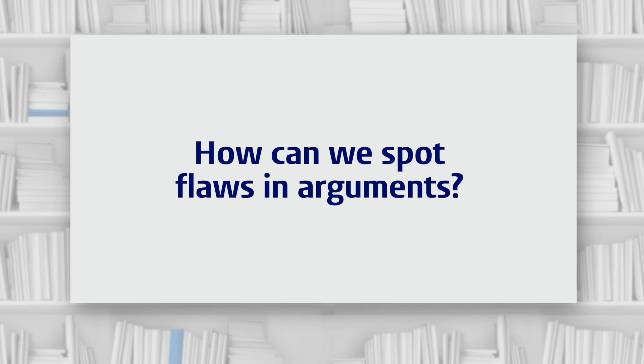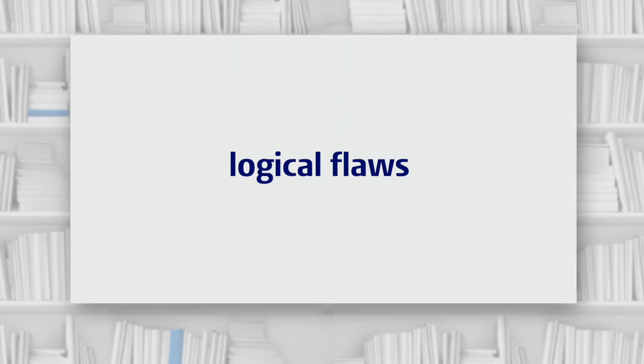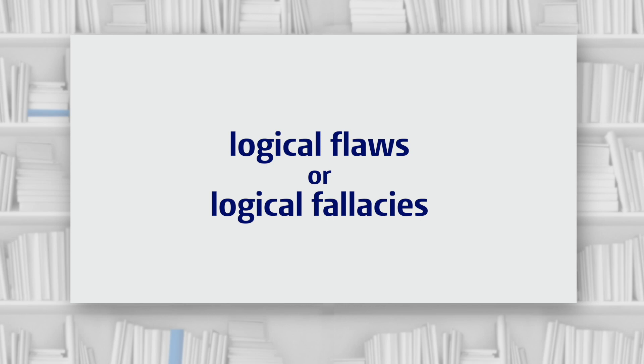How can we spot flaws in arguments? We've already looked at when an argument has a missing premise, but there are other ways to spot flaws in argumentation. We're going to look at two broad ways to approach this. First, we're going to look for logical flaws. Sometimes an argument looks reasonable, but there's a flaw or a failure in the logic. These logical flaws or failures are also called logical fallacies. There are lots of different types of logical fallacy — we're just going to look at three that you might encounter.